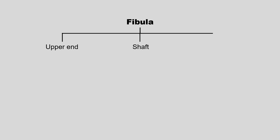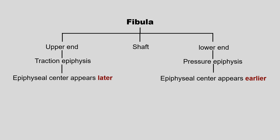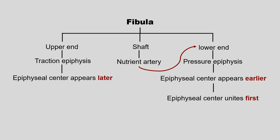Now we come to the violation. The fibula has a diaphysis, an upper end, and a lower end. The upper end is the traction epiphysis and the lower end is the pressure epiphysis. According to the normal rule, the epiphyseal center appears earlier in the pressure epiphysis and later in the traction epiphysis. So according to the law of union, the epiphyseal center in the lower end of the fibula should unite with the diaphysis later. However, if we look at the direction of the nutrient artery — which is towards the lower end — this center actually unites first with the diaphysis, not last.